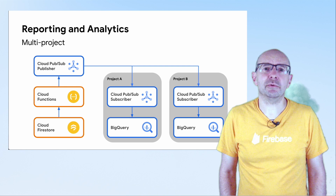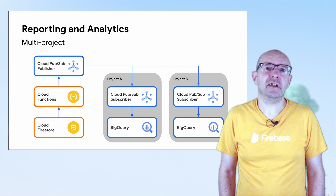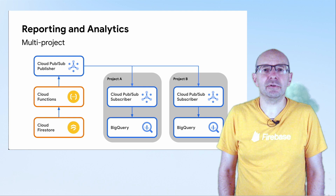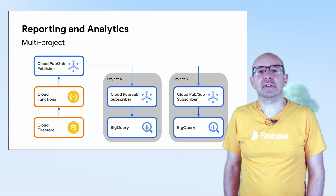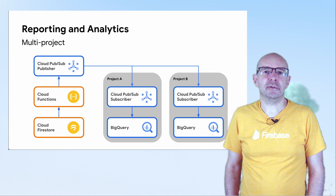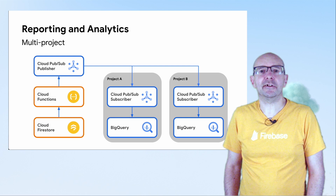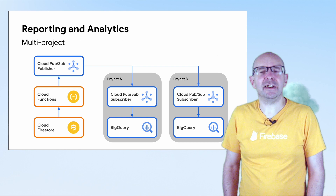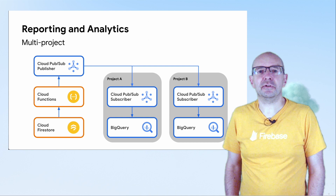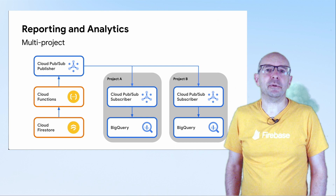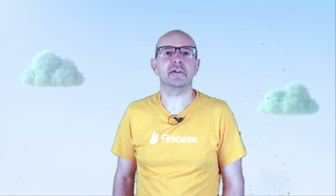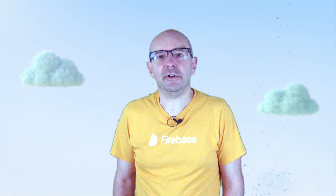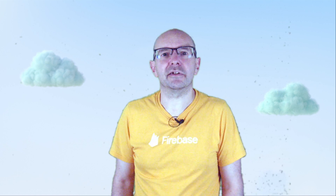You can also provide complex transformations and windowing to your data using a tool like Dataflow. How you use BigQuery, Cloud Pub/Sub and Dataflow will vary depending on your application — you can architect them in any way you like to produce different results to suit your client needs. To return the data to your users you can write a callable function, an API endpoint, or use Data Studio.